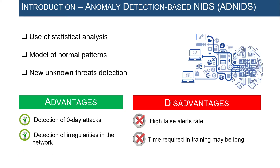The second type of IDS is called anomaly detection based IDS, or ADNIDS. This category relies on statistical analysis to model the normal behavior of a computer network — what is called the network baseline. Any deviation from the baseline is classified as a cyber threat. A strength of ADNIDS is that it can detect unknown zero-day attacks, but it is well known for a high rate of false alarms and requires more time for training the system on normal behavior.